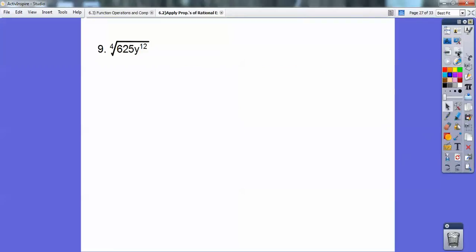Okay, so here we go. The 4th root of 625, and 625 is 5 to the 4th, by the way. And if you can recognize, if I wrote y out 12 times, how many times can I pull out 4 of a kind? I can pull 3 of them out, you guys. So 3 y's is going to get me y cubed, so it's 5 y cubed.